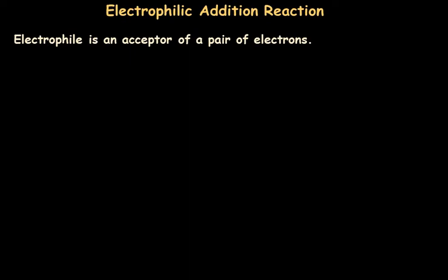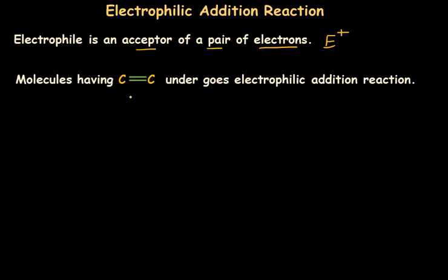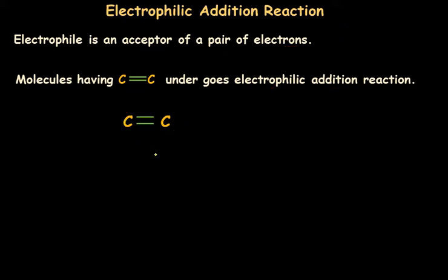Let's start by learning about electrophilic addition reaction. First, what is an electrophile? An electrophile is an acceptor of a pair of electrons — it should be positively charged so that it can accept the pair of electrons from another compound. This is relevant to molecules with a C=C double bond, which has a good electron cloud or electron density around it. That electron density can attract the positively charged electrophile.